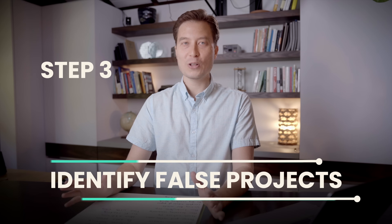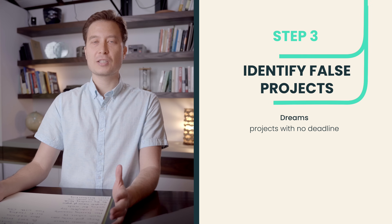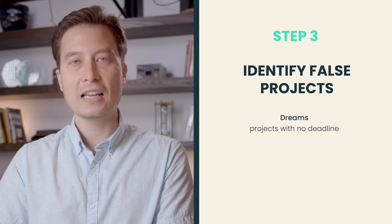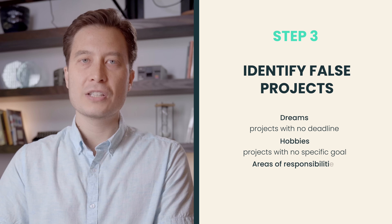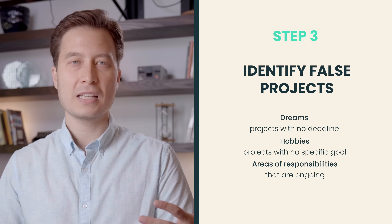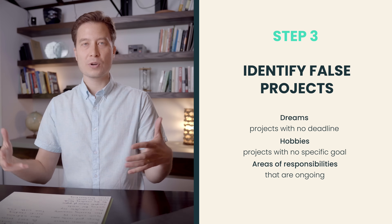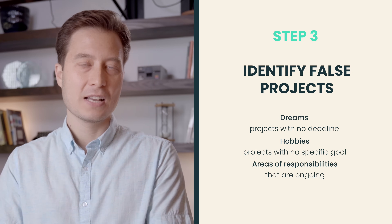I have a few ways to narrow things down before simply striking projects off my list. Step 3: identify false projects. Some items here aren't really projects. The most common items that sneak onto a project list are dreams, hobbies, and areas. Dreams are like projects but don't have a specific deadline or timeline. Hobbies are projects without any particular outcome or goal in mind. Areas are ongoing responsibilities that don't really end — things like your health, your family, your finances, or your career. Let's identify these and remove them.